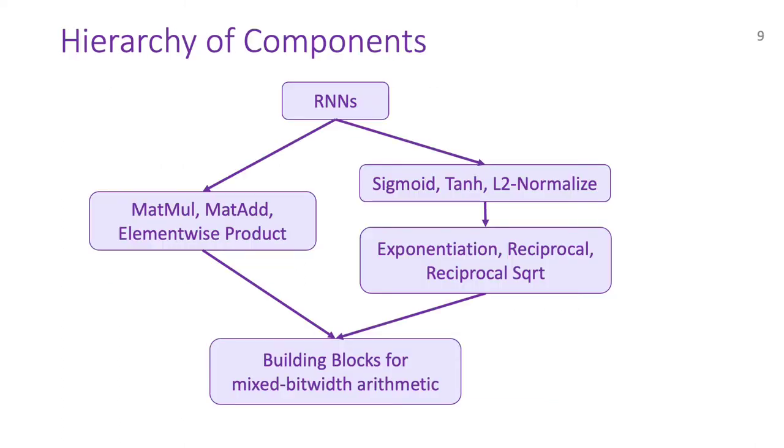Now, consider this figure which shows the hierarchy of the different components we deal with. At the top level, we have RNNs that use basic arithmetic layers like MATML, as well as math function layers such as sigmoid, tanh, and L2 normalization. The math function layers in turn rely on exponentiation, reciprocal, and reciprocal of square root. Finally, at the bottom level, we have our building blocks for mixed bitwidth arithmetic that are used by all the layers. In the rest of this talk, we'll go bottom up, starting with the building blocks at the bottom level, and then, we'll sequentially go over each level on the more interesting right branch of this hierarchy.